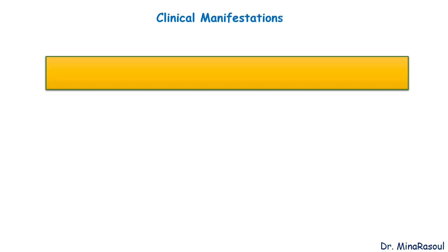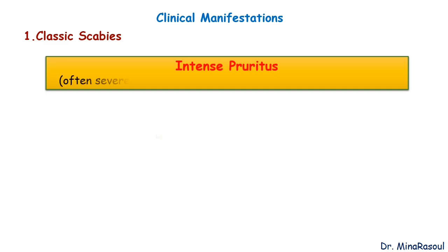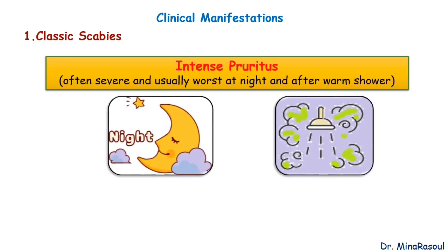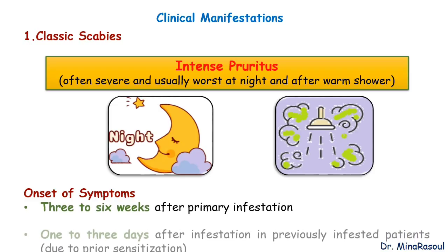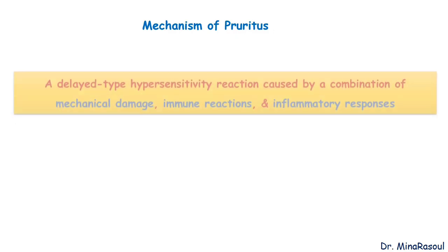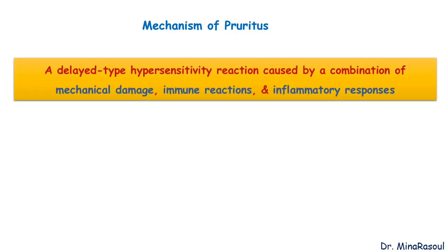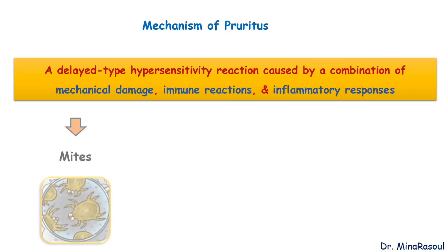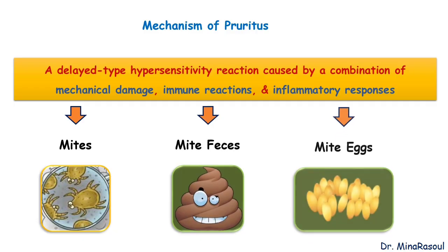The predominant clinical feature of classic scabies is intense pruritus, which is typically worse at night or after a warm shower. This nocturnal pruritus is a clue to the diagnosis. The onset of scabies symptoms is 3-6 weeks after primary infestation. In a previously infested individual, onset of symptoms may be shortened to 1-3 days following infestation due to prior sensitization. The intense itching is a delayed-type hypersensitivity reaction caused by a combination of mechanical damage, immune reactions, and inflammatory responses to the mite, mite feces, and eggs of Sarcoptes scabiei.